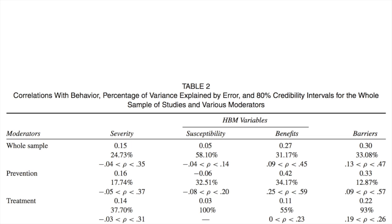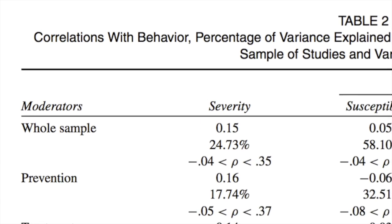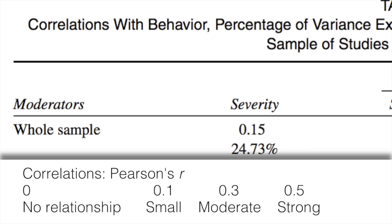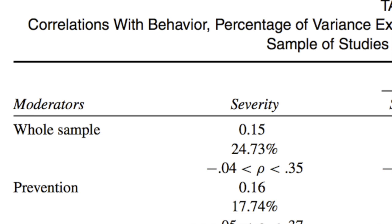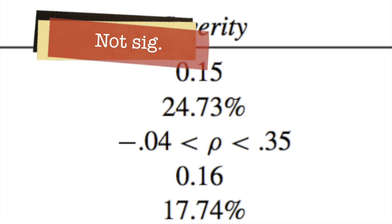If we look at the first row of the table, across the top it identifies correlations between the behaviour and different types of beliefs. Over on the left, severity has a correlation of 0.15 — a pretty weak correlation. Looking at the credibility interval, it crosses zero, and remember this is an 80% credibility interval when most of the time 95% is what we aim for.